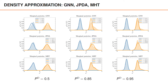On this slide we have the density approximations for GNN, JPDA, and MHT for the same scenario with three different probabilities of detection: PD equal to 0.5 on the left, PD equal to 0.85 in the middle, and PD equal to 0.95 on the right. From these figures we can see that as a general rule MHT is a better approximation than JPDA, which is a better approximation than GNN. This general rule holds not only for this small one-dimensional example with two objects, but also when we have many more objects and object states with higher dimension.